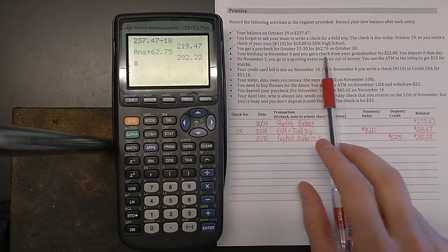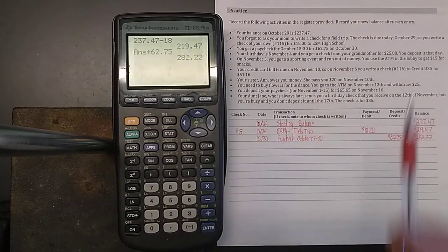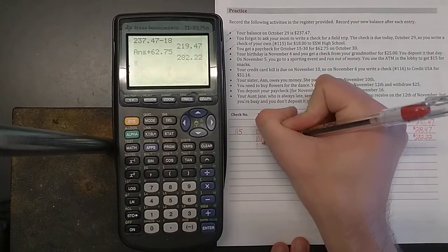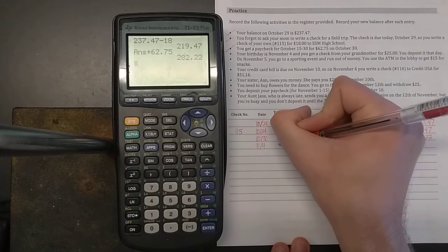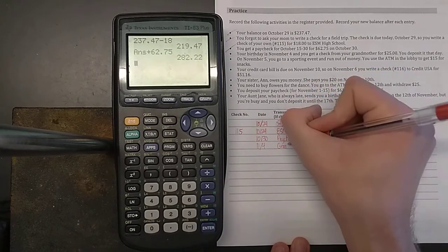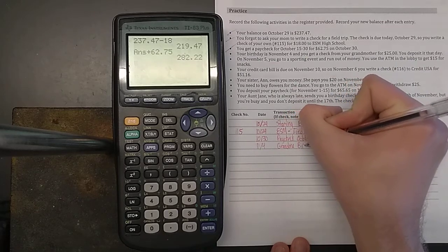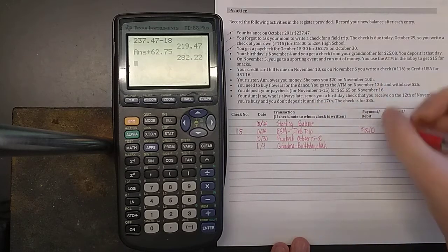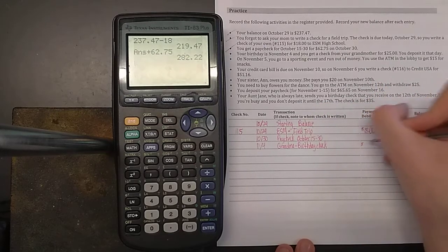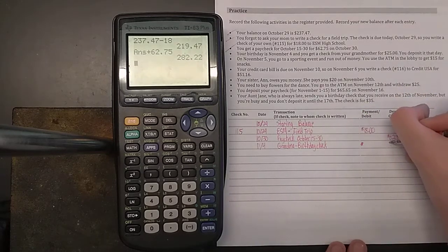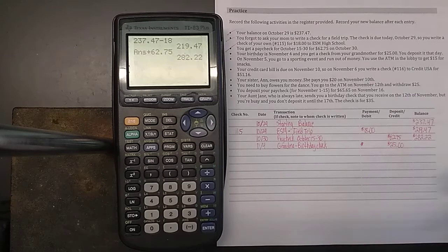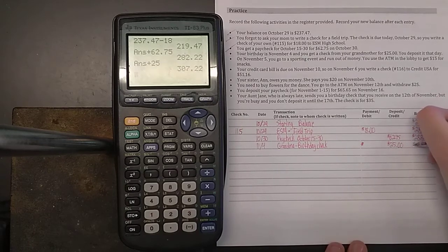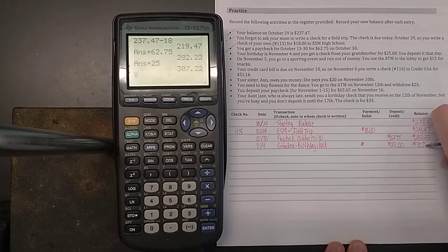Your birthday is November 4th. And you get a check from your grandmother for $25. You deposit it that day. Again, you're not writing the check. So nothing in check number, but November 4th would be 11/4. The transaction, grandma birthday check. You write in, since it's a, okay, it's a deposit. I almost wrote it in the wrong spot. It's a deposit. So it's $25 more. Take your previous balance, $282.22 plus $25. Your account is now up to $307.22.